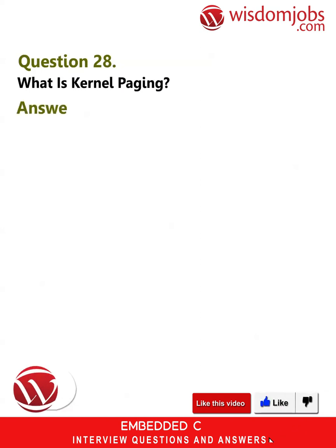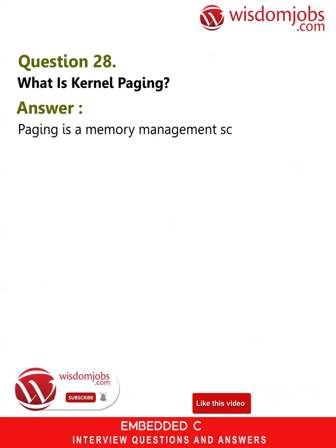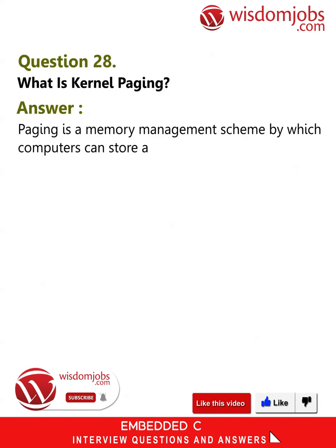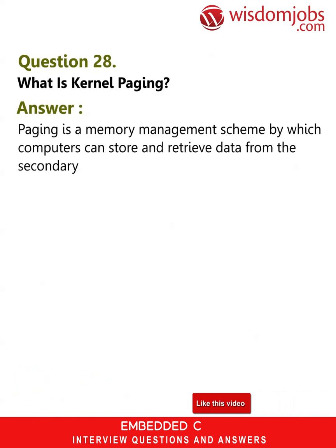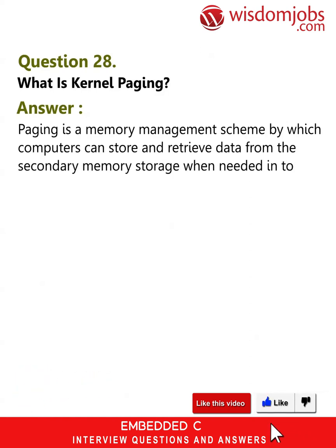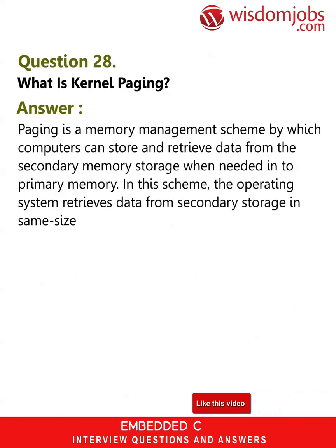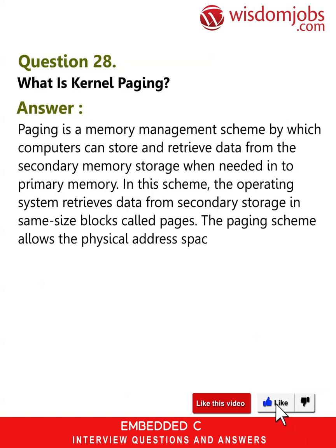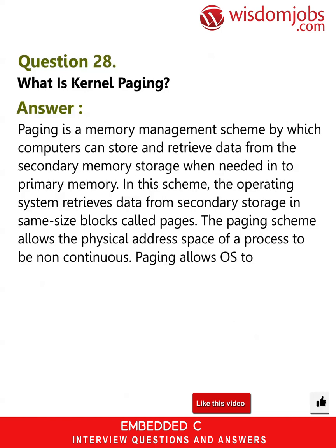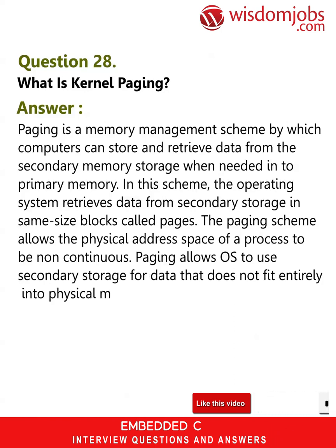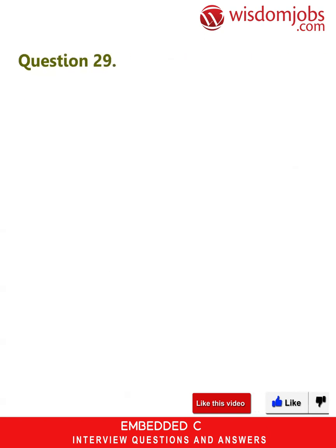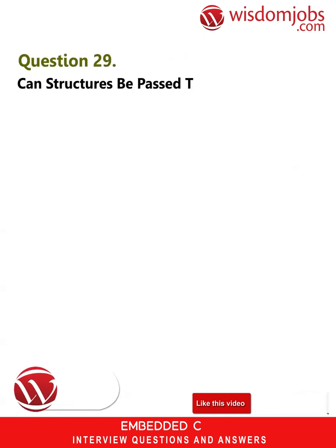Question 28: What is kernel paging? Answer: Paging is a memory management scheme by which computers can store and retrieve data from secondary memory storage into primary memory when needed. The operating system retrieves data from secondary storage in same-size blocks called pages. The paging scheme allows the physical address space of a process to be non-contiguous, and allows the OS to use secondary storage for data that does not fit entirely into physical memory.